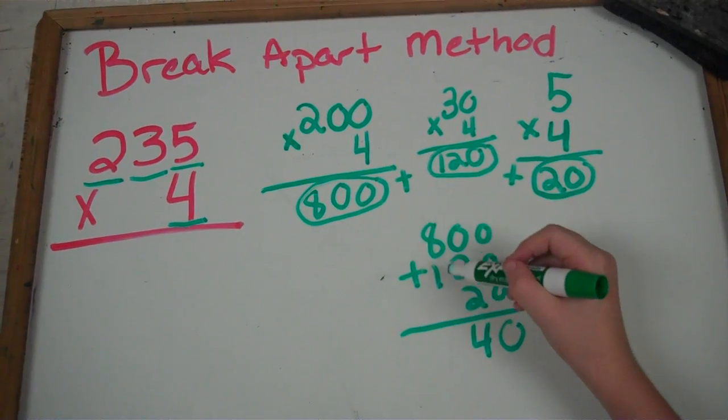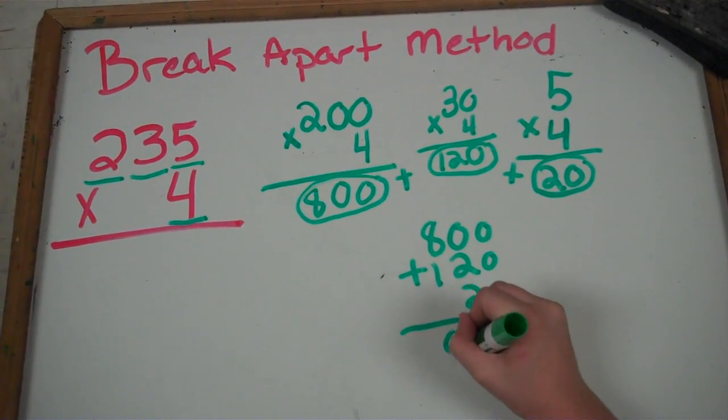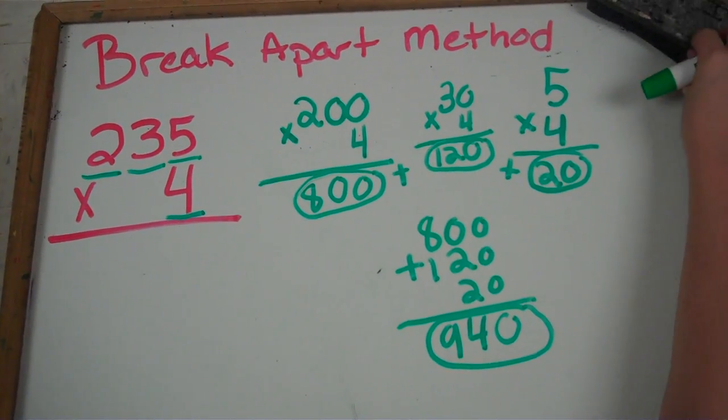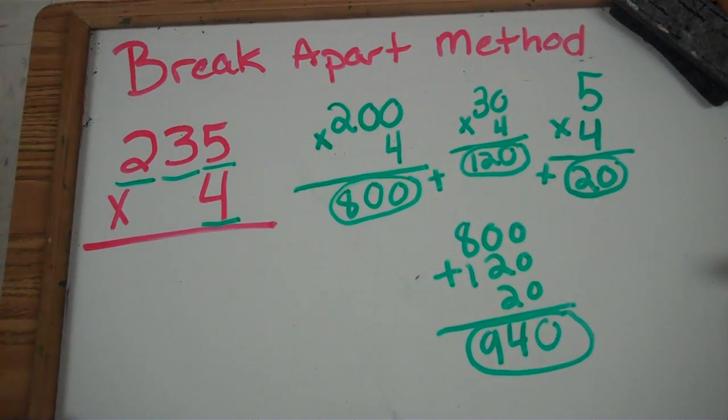And then the 8 plus 1 is 9, which is 940. Now we are going to check it with the standard method.